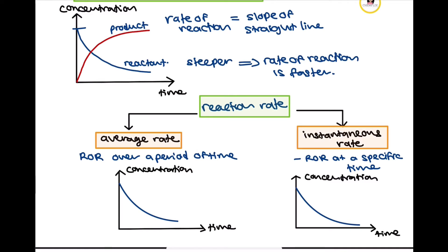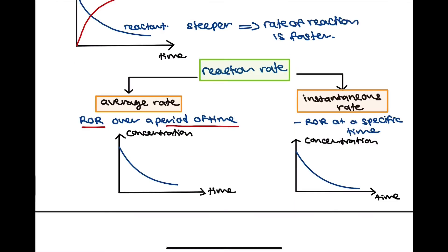Average rate of reaction is the rate over a period of time. For the graph given here, the average rate for the whole reaction can be calculated by drawing a large triangle that connects the start and end of the reaction. That would be change in Y over change in X. Average rate is calculated as the gradient.